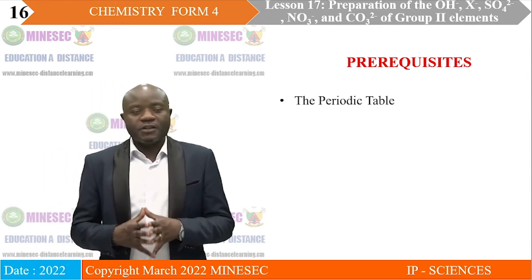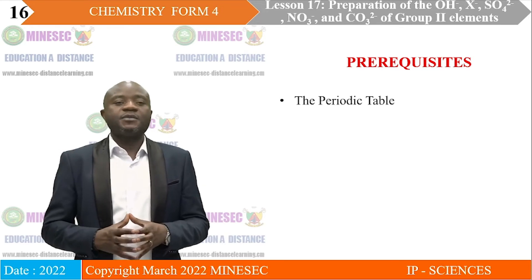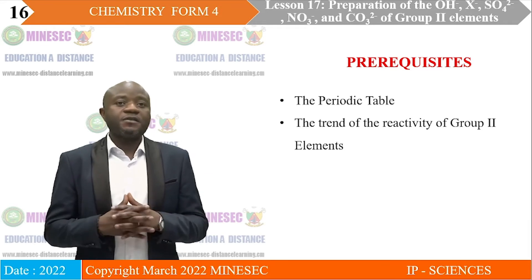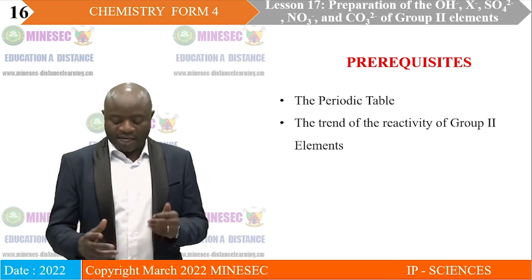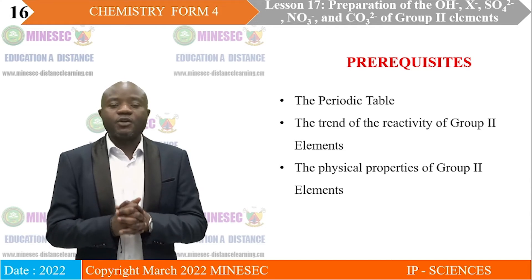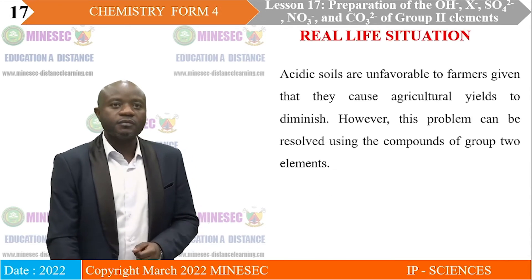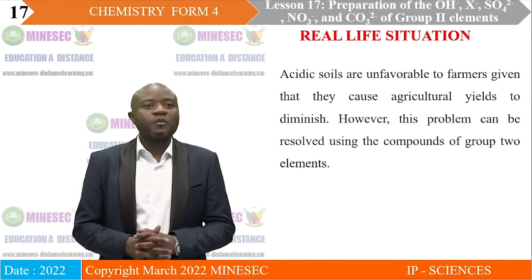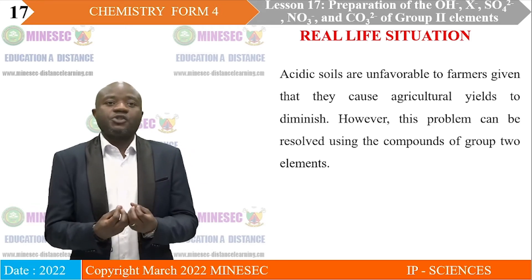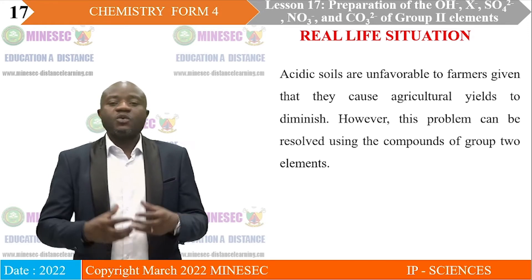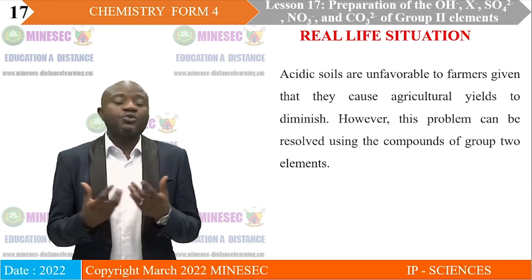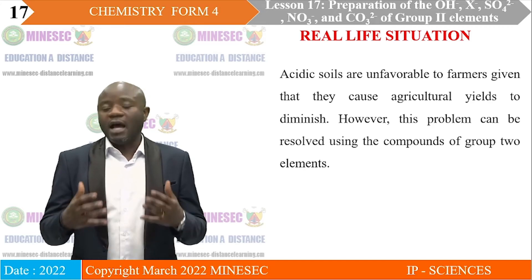Prerequisite knowledge: You can understand this lesson because you are already aware of the periodic table. You know the trend of the reactivity of Group 2 elements as you move down the group, and you also know the physical properties of the elements of Group 2. Real-life situation: Acidic soils are unfavorable to farmers given that they cause agricultural yields to diminish — when the soil is acidic or when the pH of the soil is very low, plants cannot do very well, resulting in a drop in agricultural yields.